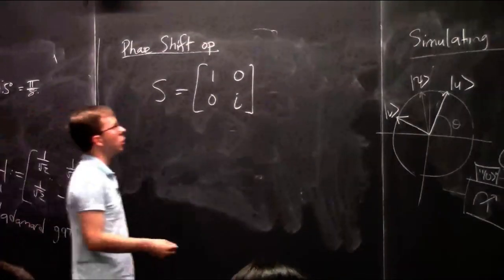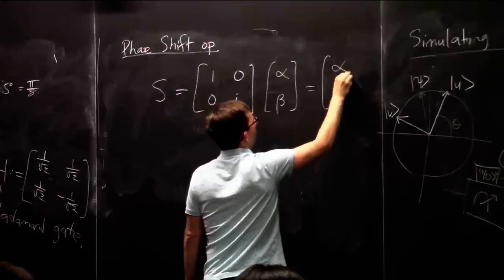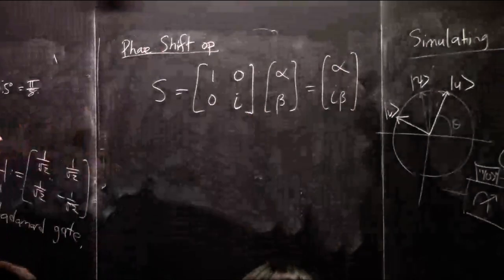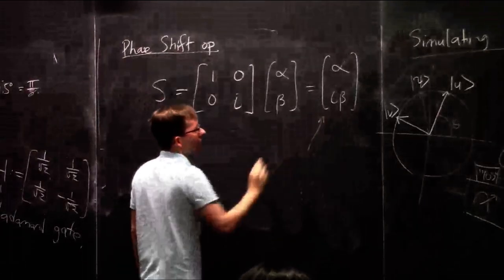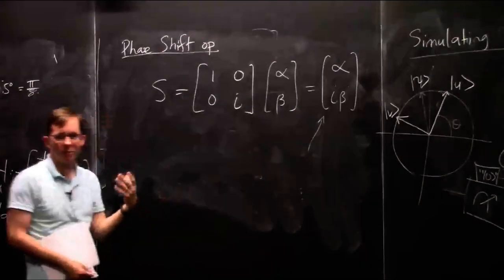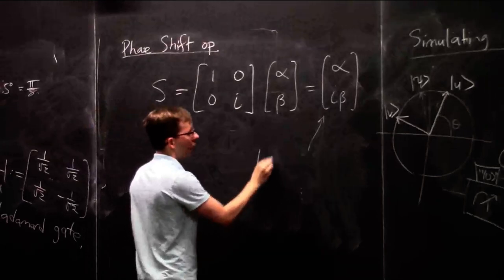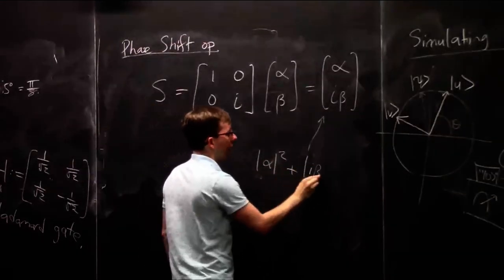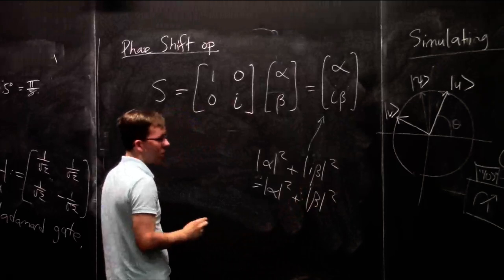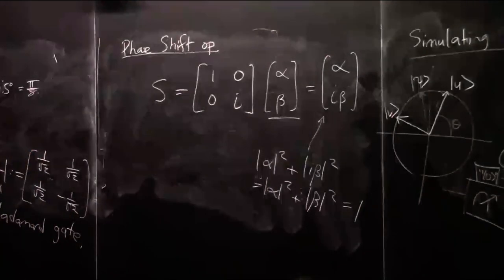This is an operation you can do to qubits. What does it do? If you multiply it against a qubit with amplitudes alpha and beta, you get alpha and i times beta. We'll get some complex numbers in the picture. One thing to check: this had better be a valid qubit state. The sum of squares of magnitudes: |alpha|² + |i·beta|² = |alpha|² + |beta|² = 1, because the magnitude of complex number i is 1. So it makes sense.